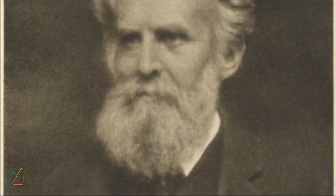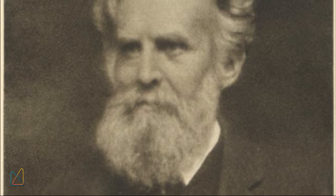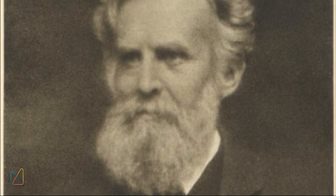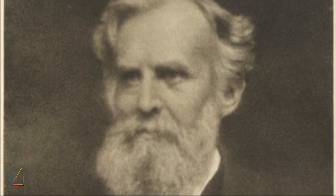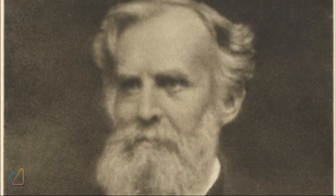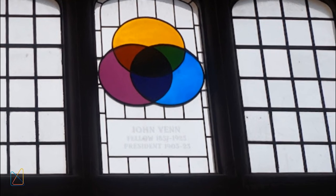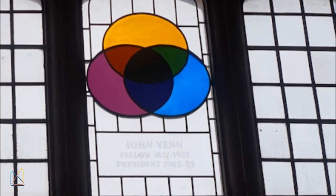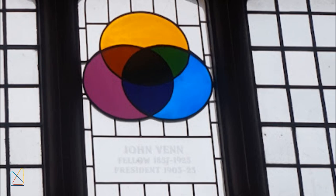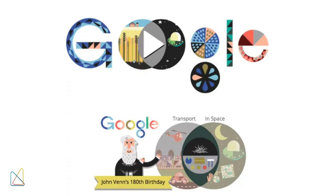John Venn passed away on April 4, 1923, but his legacy lives on. He is commemorated by memorials such as a stained glass window at Gonville and Caius College, a decorated bridge in Hull, and even a Google Doodle on his 180th birthday.